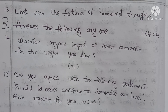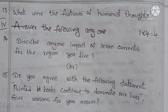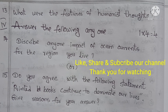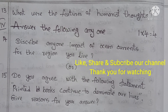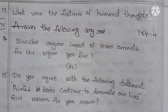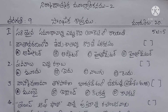Roman numeral four — answer the following, anyone. Fourteenth question: describe any one impact of ocean currents for the region you live. Or fifteenth question: do you agree with the following statement — printed blocks continue to dominate our lives? Give reasons for your answer. This is the English medium question model paper.